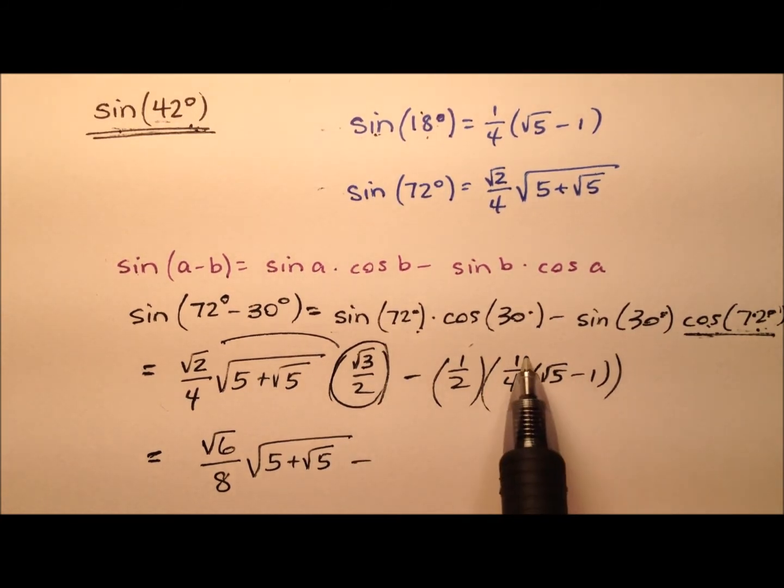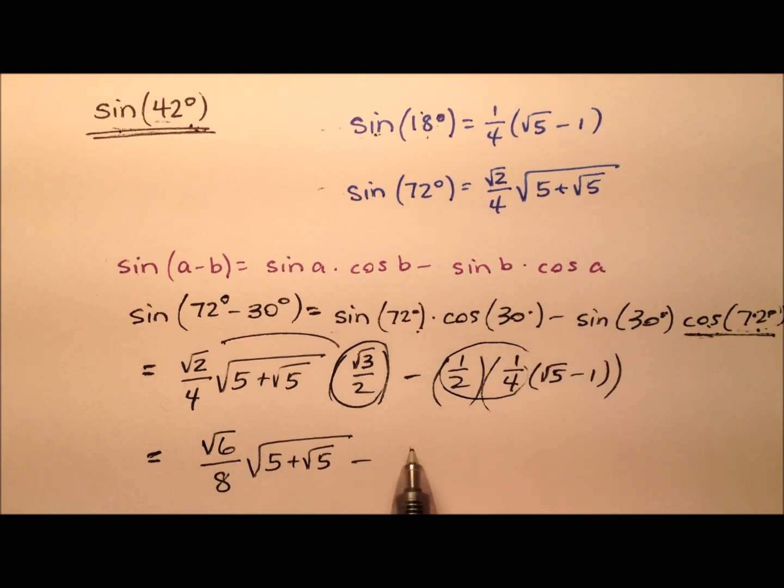And from that I'm going to subtract, and I can multiply these together and get a 1 eighth, times the quantity, and we have the square root of 5 minus 1.